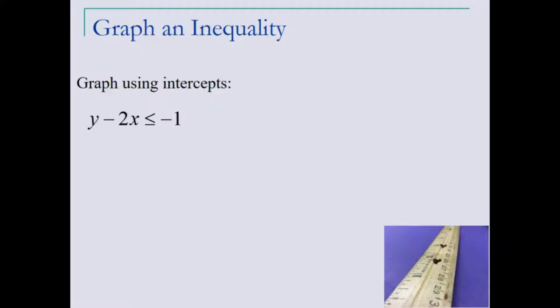To graph a linear inequality in two variables, the first thing we want to do is graph the boundary line. This can be done by graphing it by its intercepts, as we will take a look here.